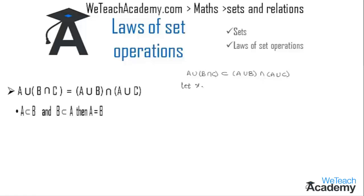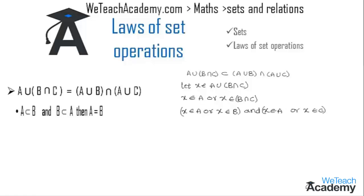Let x belong to A union (B intersection C). We can write this as: x belongs to A, or x belongs to B intersection C, which is x belongs to A or x belongs to B, and x belongs to A or x belongs to C. Here, x belongs to A or B can be written as x belongs to A union B, and x belongs to A or C can be written as x belongs to A union C. Therefore, x belongs to (A union B) intersection (A union C), so A union (B intersection C) is a subset of (A union B) intersection (A union C).